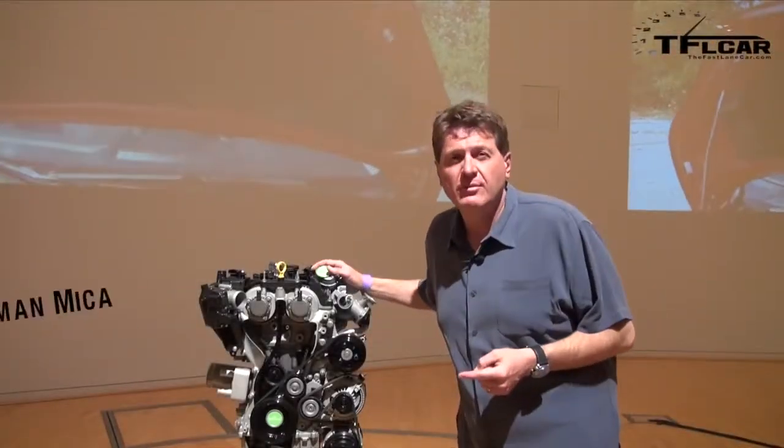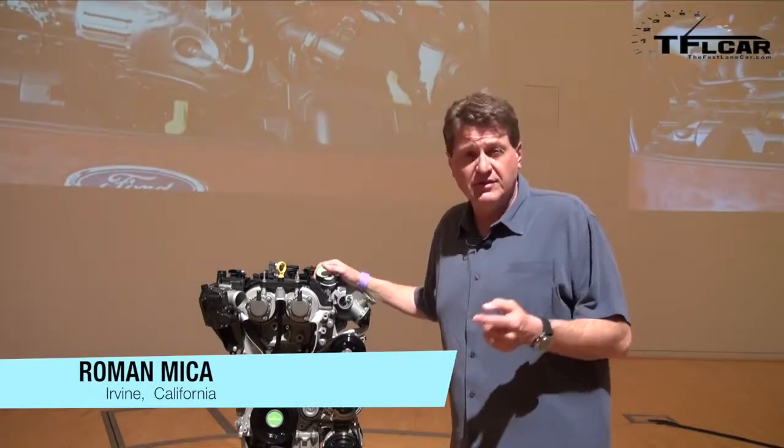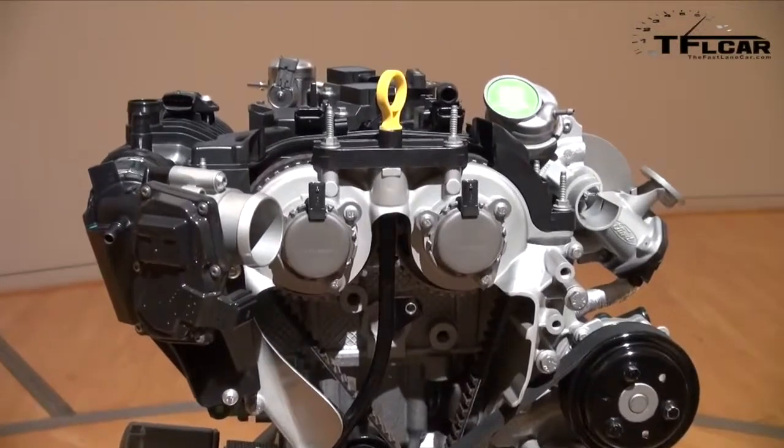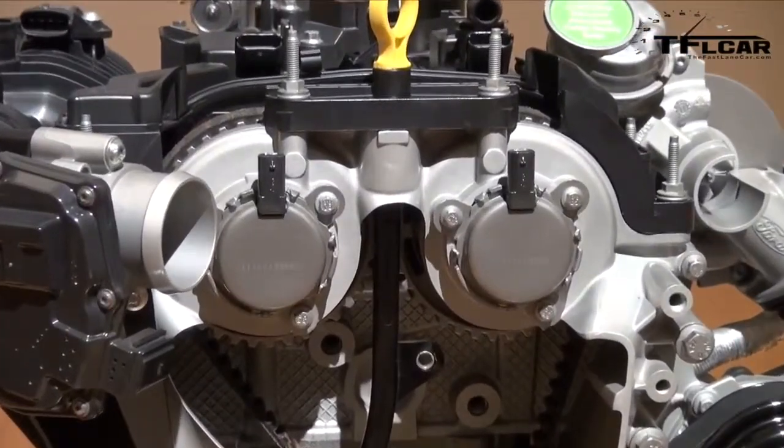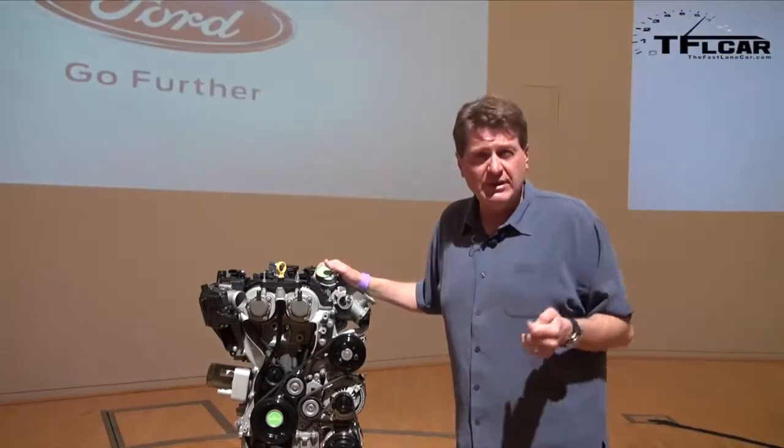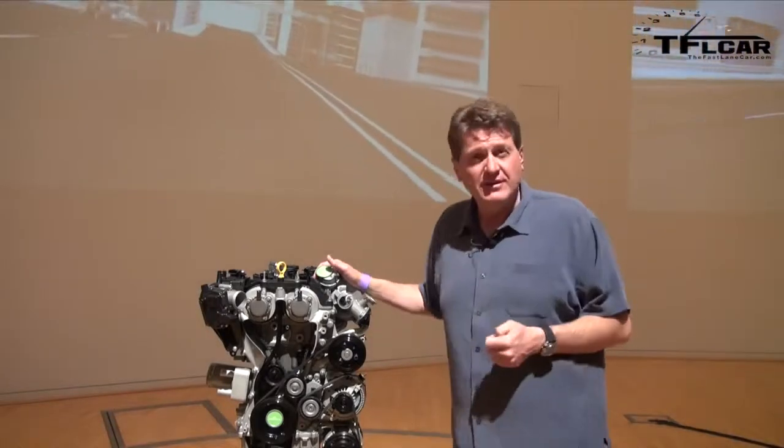Check it out, this is Ford's 1L EcoBoost engine. It has three cylinders, weighs 215 pounds, and puts out 123 horsepower. Which may not sound like a lot, but per liter compared to a Lamborghini Aventador, it's actually more. And coming up next, we're going to tell you everything you ever want to know about the new Ford Fiesta 1L that has this engine.